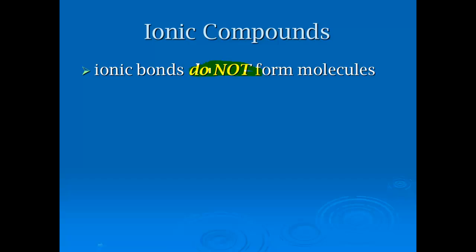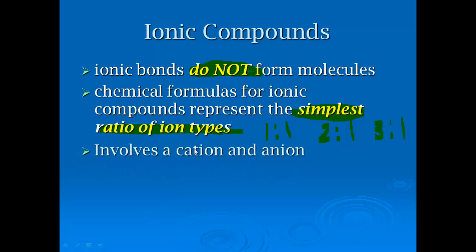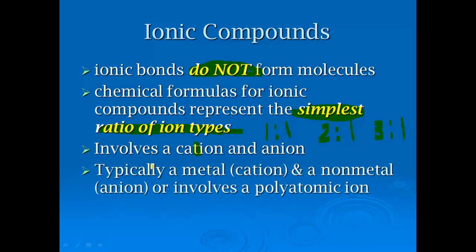Ionic bonds do not form molecules because you have metals involved. For ionic compounds, the chemical formulas represent the simplest ratio of the ion types — this is why we always reduce to a one-to-one, two-to-one, three-to-one, or similar ratio. A cation is positive and an anion is negative — it's typically a metal cation and a non-metal anion, or it involves one of those polyatomic ions.